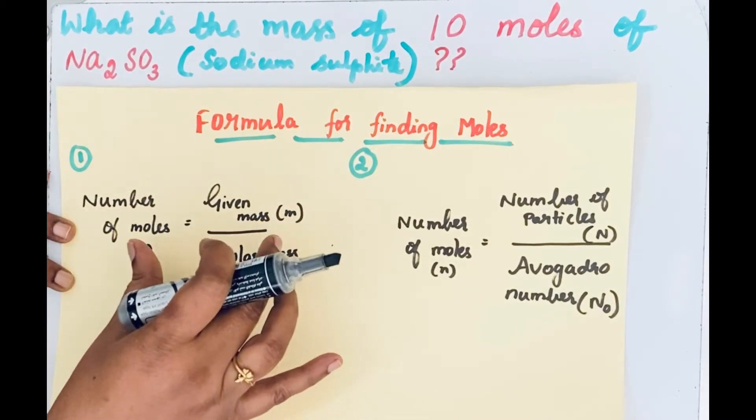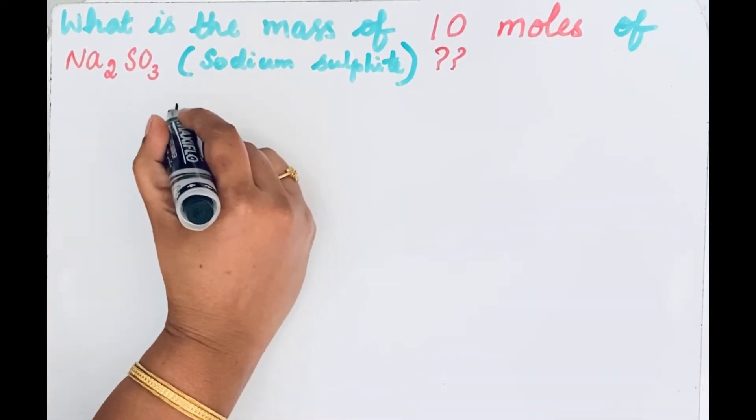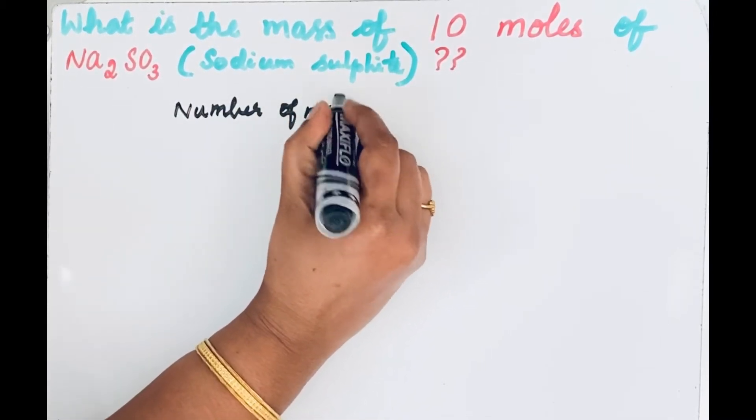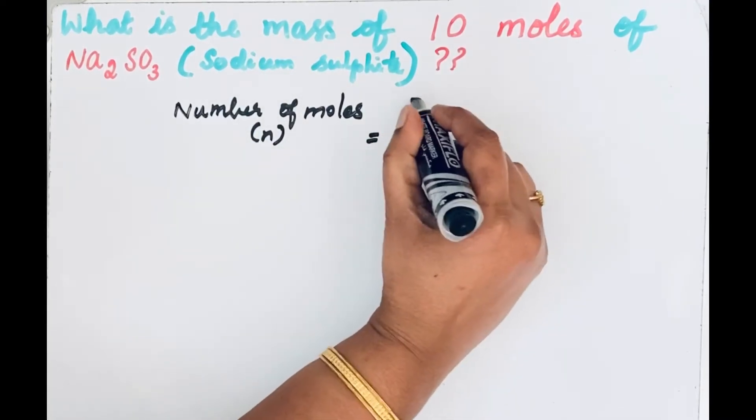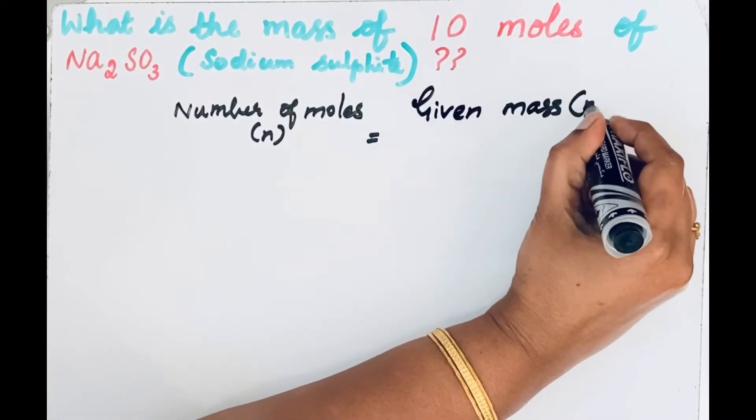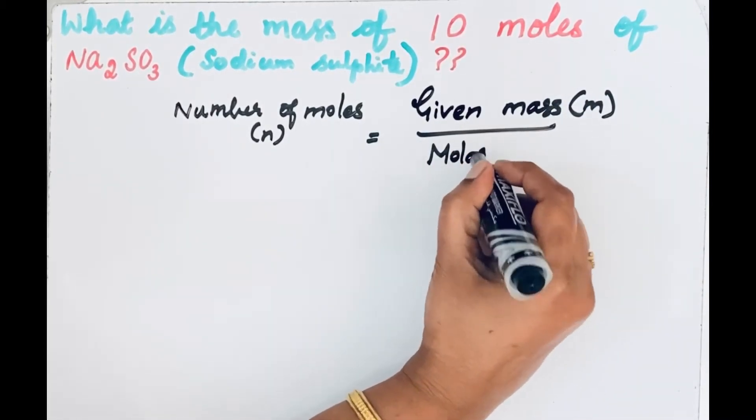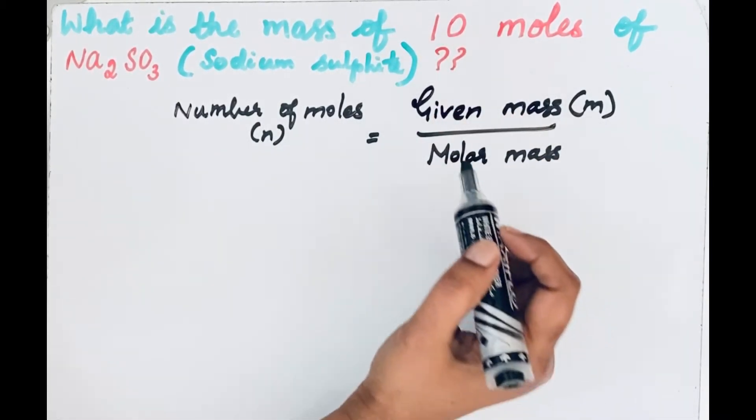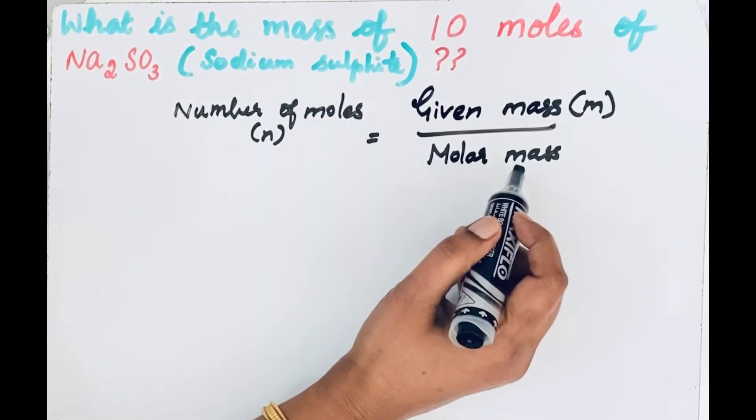So let us write formula one. Number of moles equals given mass divided by molar mass. Okay. Number of moles is given, 10 moles. They ask the mass. Then molar mass we are going to find now. So let us arrange the formula first.